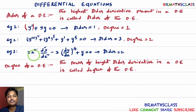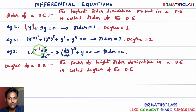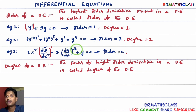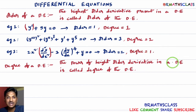Now see this third example. First order derivative and second order derivative are present. The highest order derivative is the second order derivative. Its power — nothing is there, meaning 1 will be there. Do not confuse with the 4 present elsewhere. The power of the highest order derivative is 1, so the degree of this differential equation is 1.